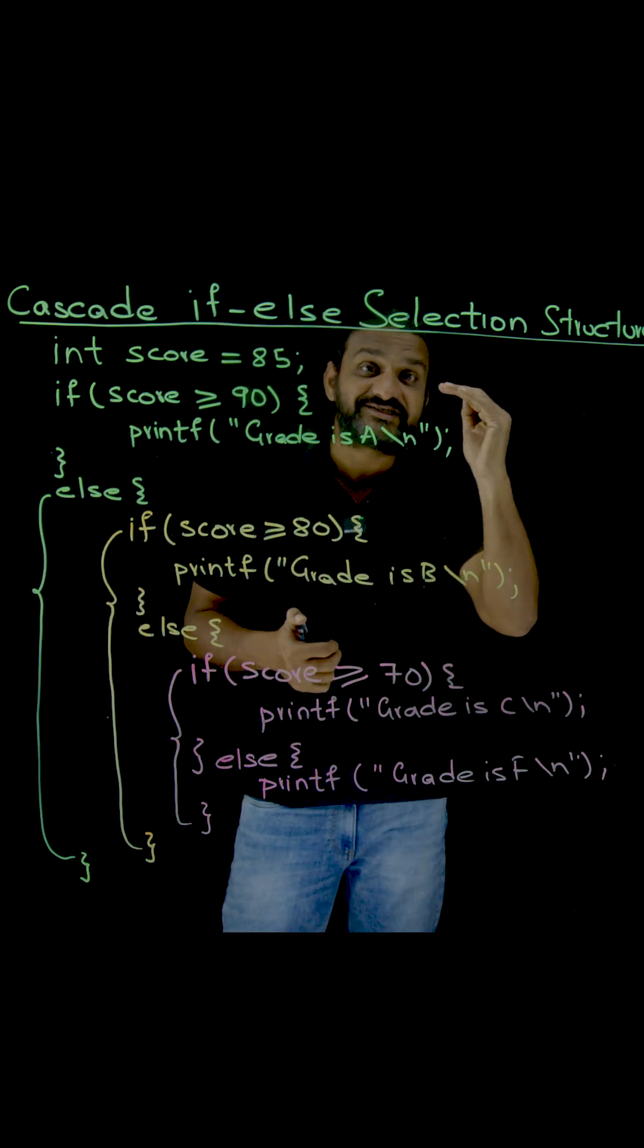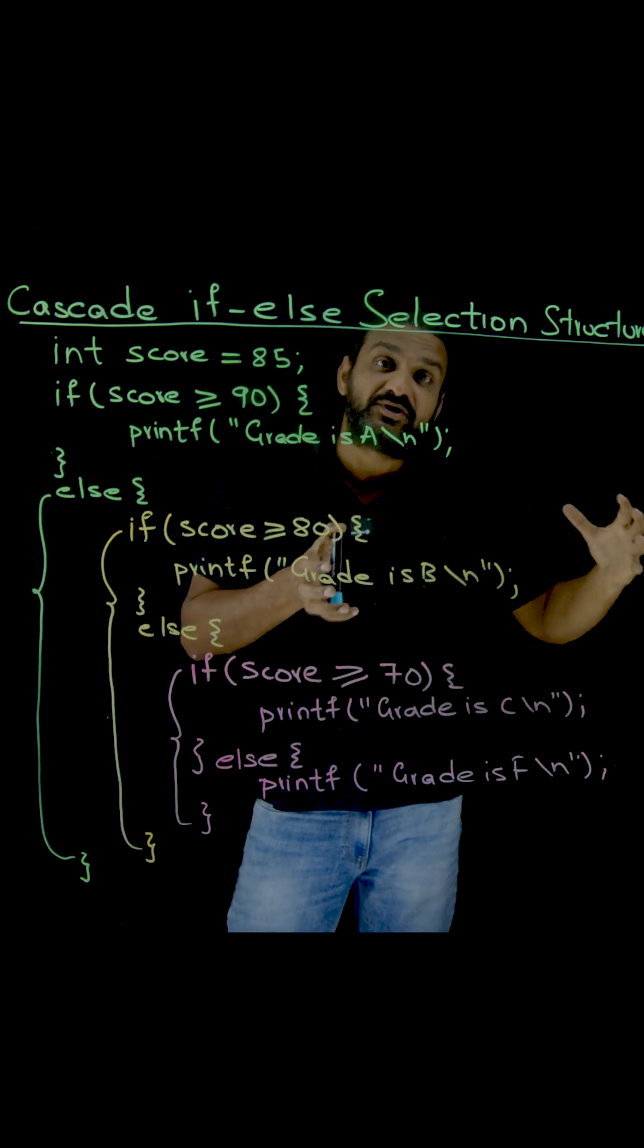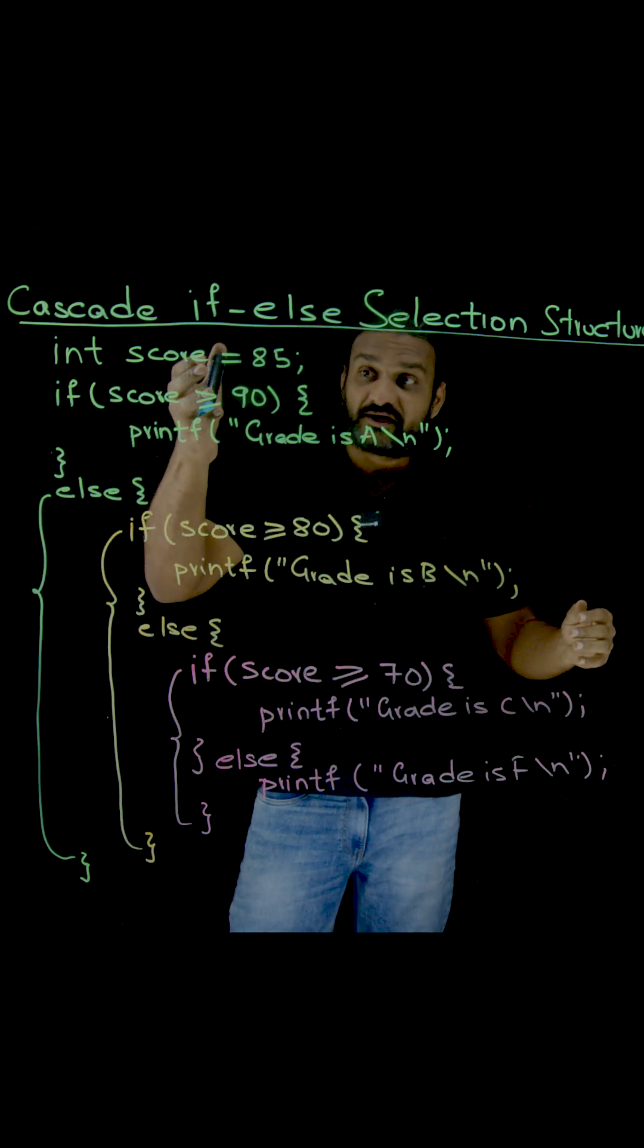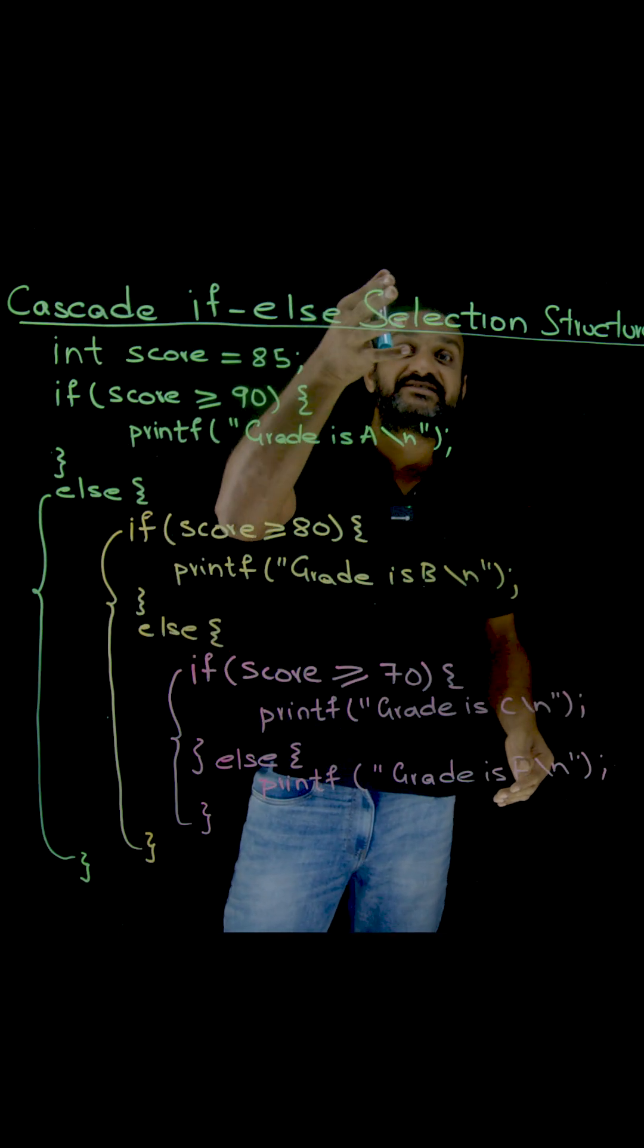So that we can make a choice from multiple alternatives. That kind of writing the program is what we call cascaded if-else selection structure.